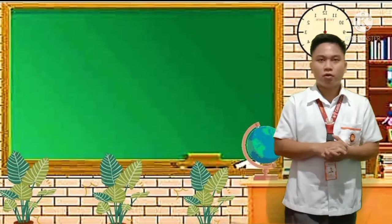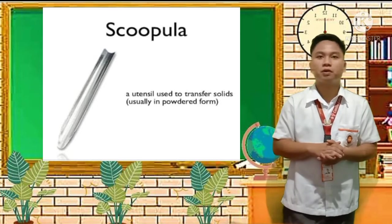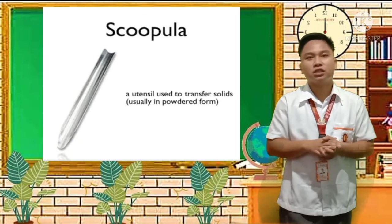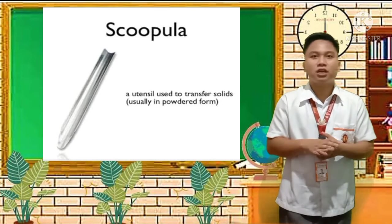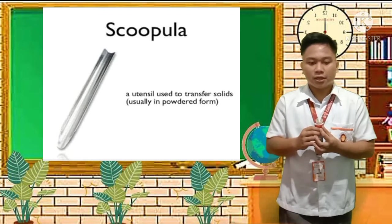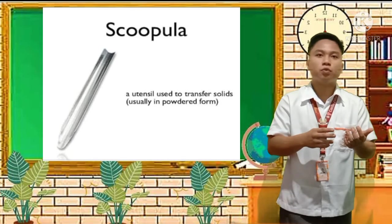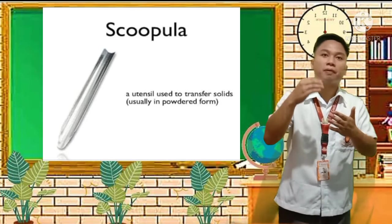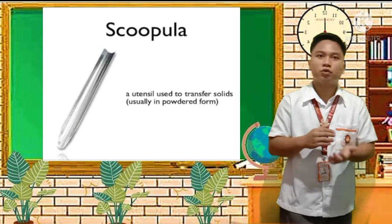For the next slide, we have the spatula. It is a utensil used to transfer solids, usually in powdered form. Its job is to transfer solid — usually in powder form. If a liquid flows through and eventually forms into a solid or powder, you then transfer that powder using the spatula. Remember its appearance — it looks like a channel for transferring material.